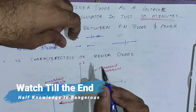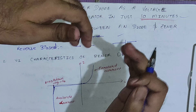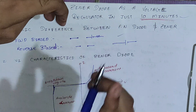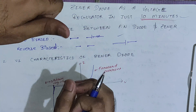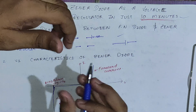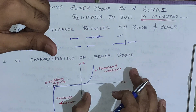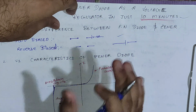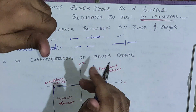Looking at the VI characteristics, the forward characteristics of a Zener diode are the same as a PN junction diode. In reverse bias, a PN junction acts as an open circuit and doesn't allow any current — that's why it is a unidirectional device. A Zener diode is called a bidirectional device because it allows reverse current. The doping of a Zener diode is adjusted so it can handle avalanche current while maintaining the breakdown voltage, also called the Zener voltage.